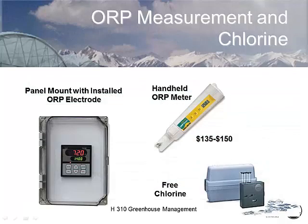Most people injecting oxidation reduction chemicals should use an inline ORP meter, or a handheld meter. You can also get a free chlorine test kit from a spa store. Managing chlorine chemistry is similar to managing a hot tub — you need to monitor and balance it regularly.